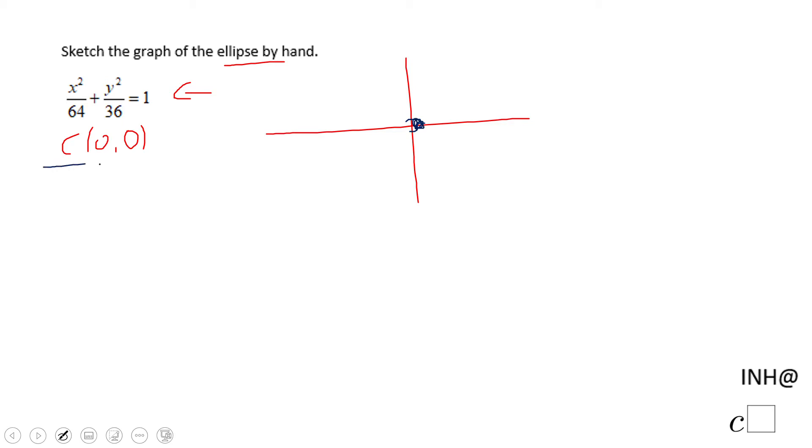Then I notice we have that 64 that is a squared. a squared equals 64, which is going to give me a equals plus and minus 8, right?